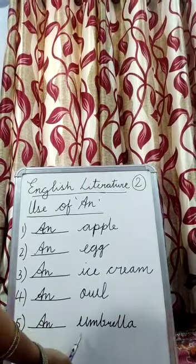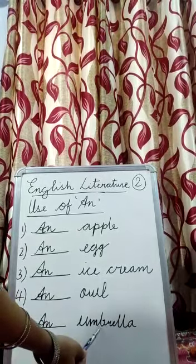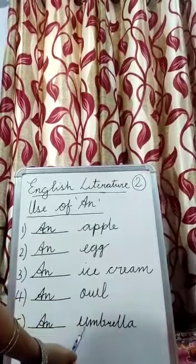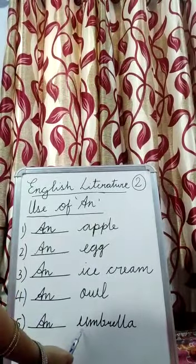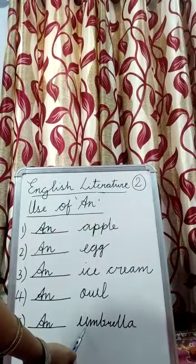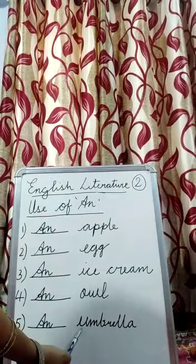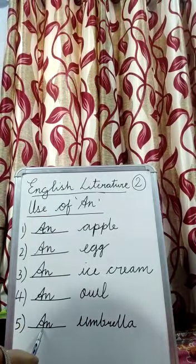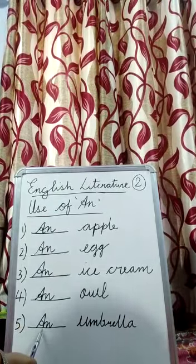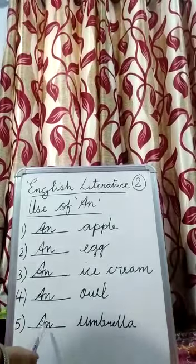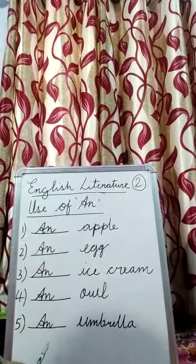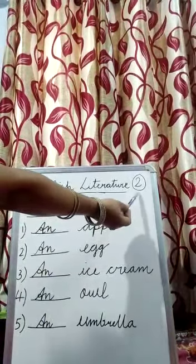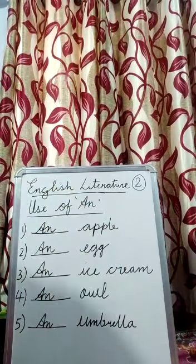And fifth one, what is written here? U, M, D, R, E, double L, A — Umbrella. And it starts with letter U. U is what? A vowel. So what you will use here? AN. And so children, complete this work in your copy number 2.